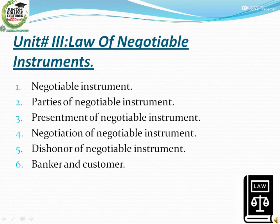Unit Number 3 is about the Law of Negotiable Instruments. In this unit we will study 6 chapters: negotiable instruments, parties of negotiable instruments, presentment of negotiable instruments, negotiation of negotiable instruments, dishonour of negotiable instruments, and bankers and customers.